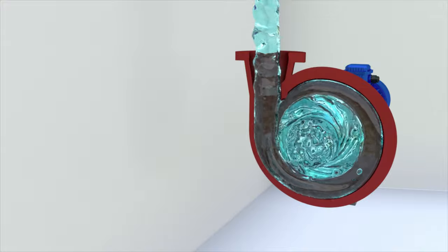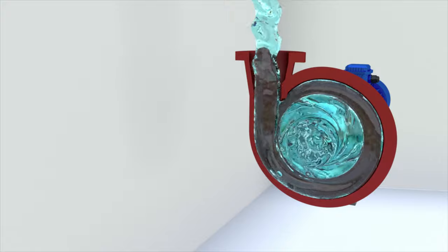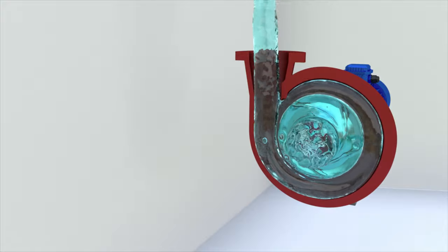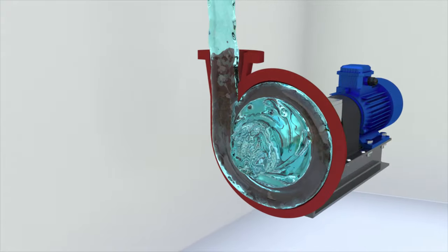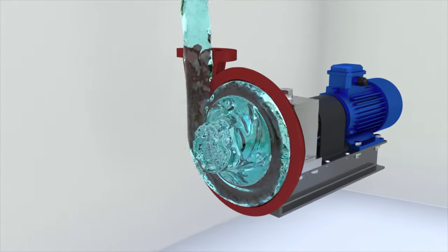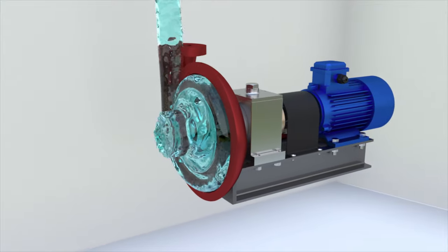The accelerated liquid particles enter the volute, which converts part of the velocity into pressure. The diameter of the passage section of the volute in the discharge nozzle gradually increases. The fluid velocity decreases, and the pressure, according to Bernoulli's law, increases.